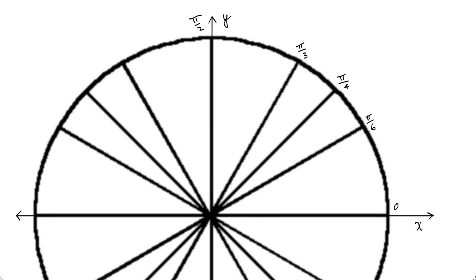We're back with the unit circle — a circle that has a radius of 1. In this video we're going to look at coming up with the coordinates for the standard points in quadrant 1 of the unit circle: pi over 6, pi over 4, pi over 3, and pi over 2. We'll come up with the coordinates for those points, and then in a second video we'll talk about how those points relate to the trigonometric functions for those particular angles.